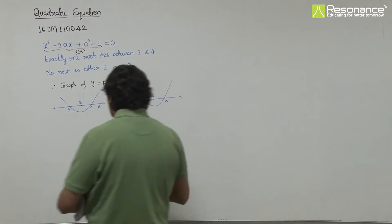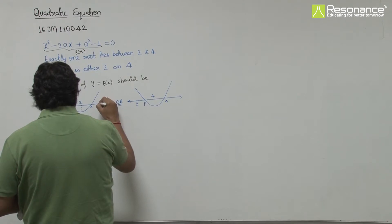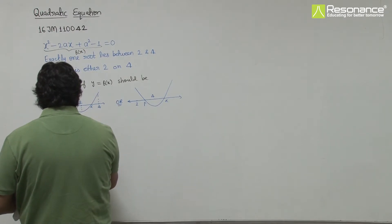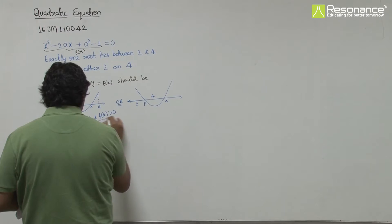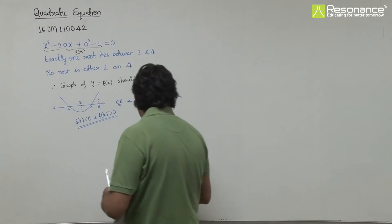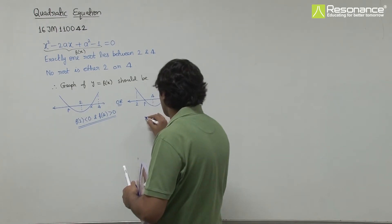In the first case, the value at x = 2 will be negative and at x = 4 will be positive. In the second case, at x = 2 it will be positive and at x = 4 it will be negative.